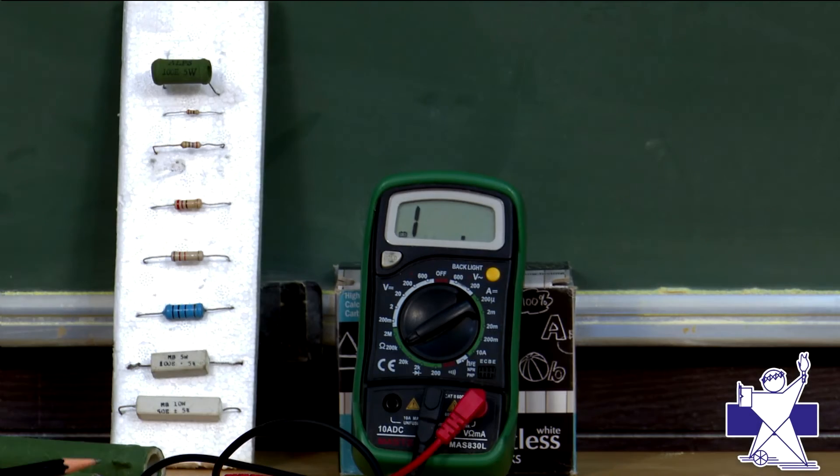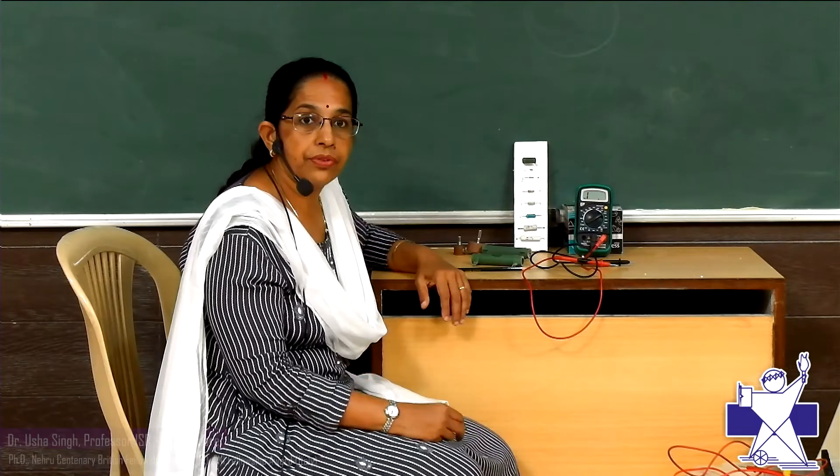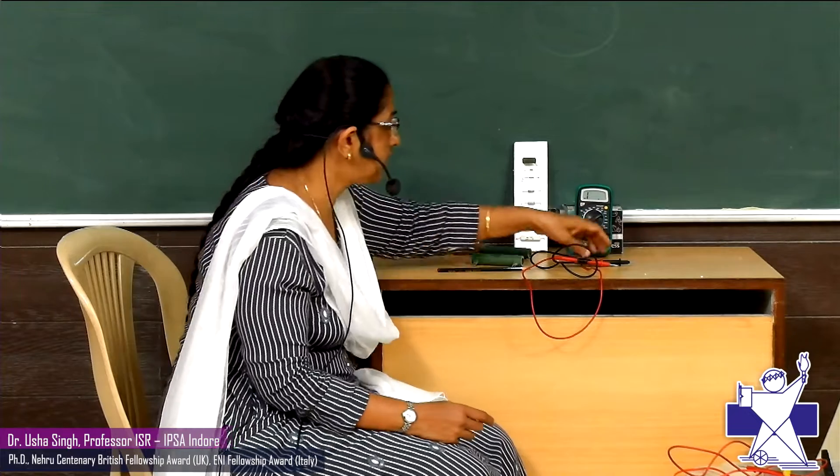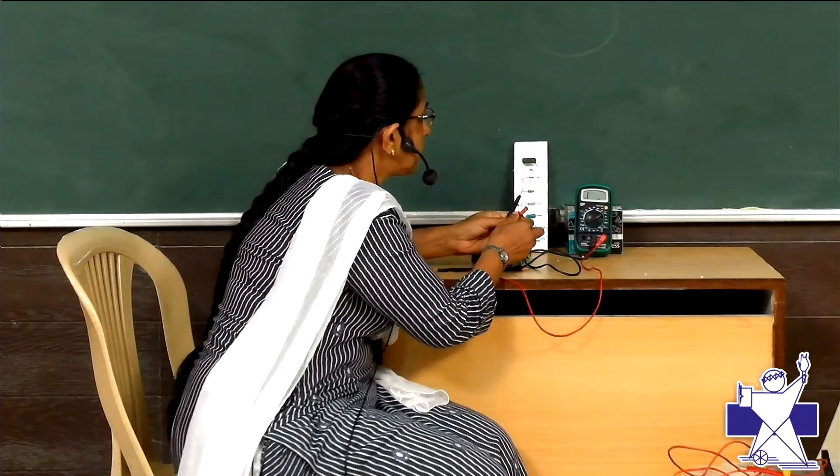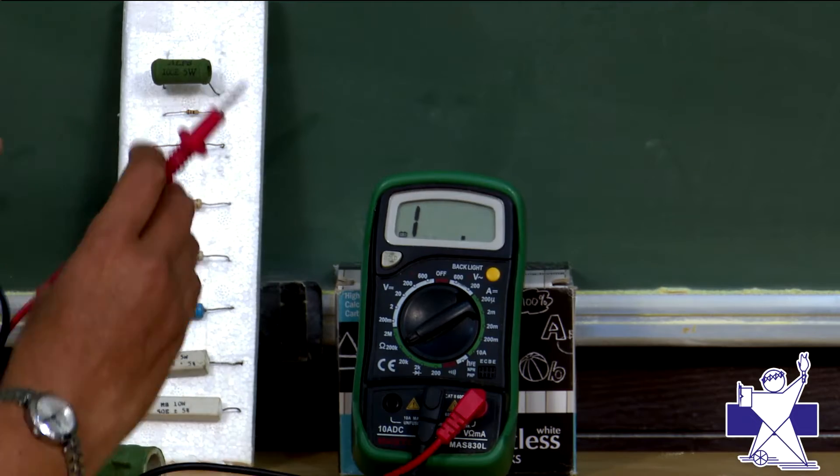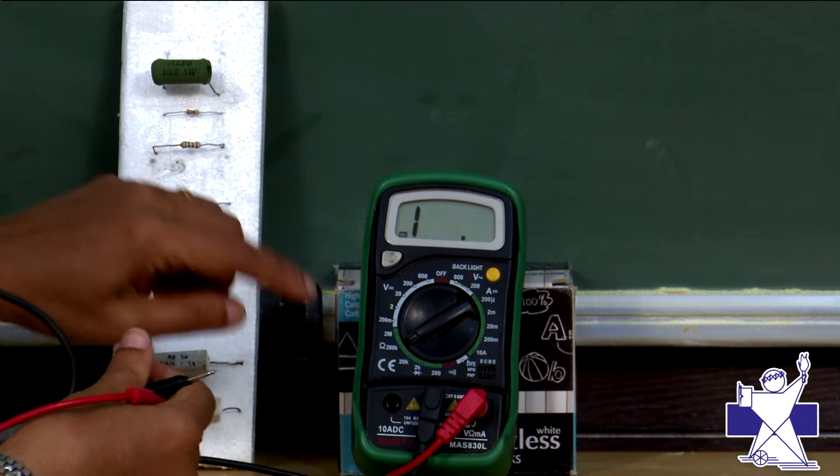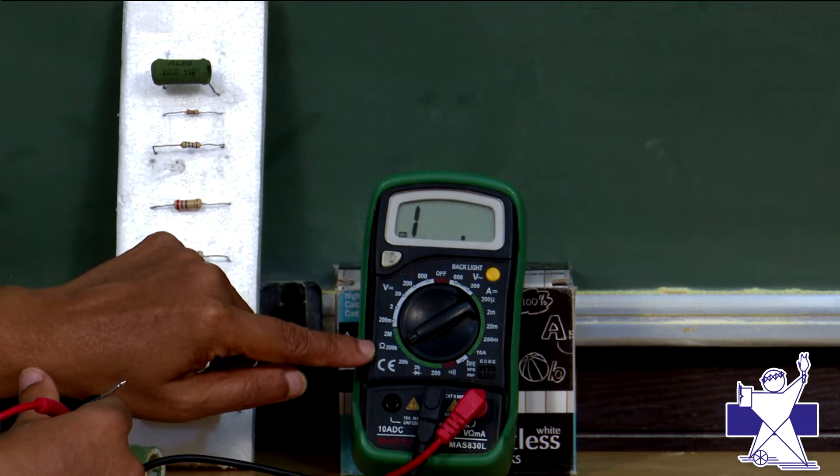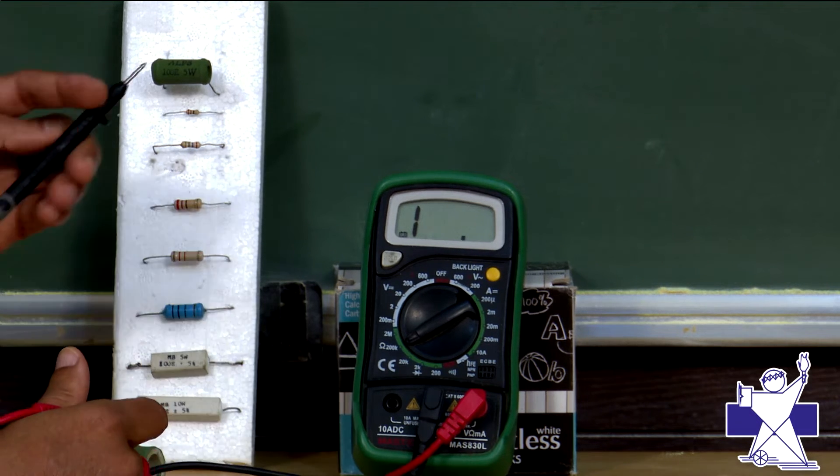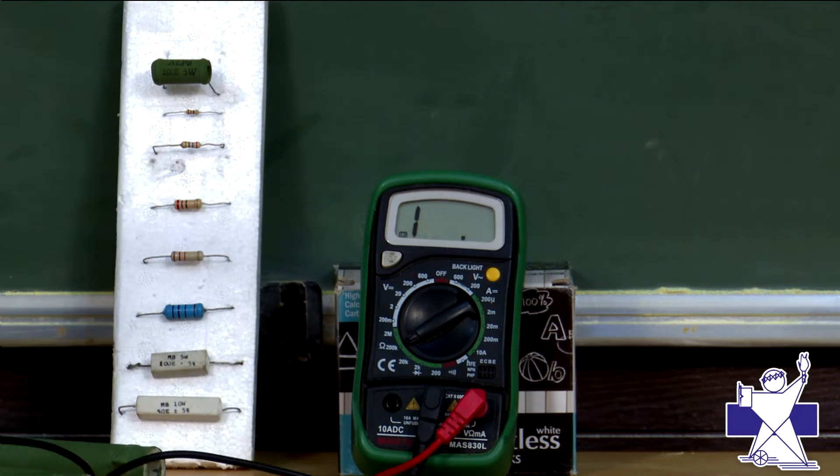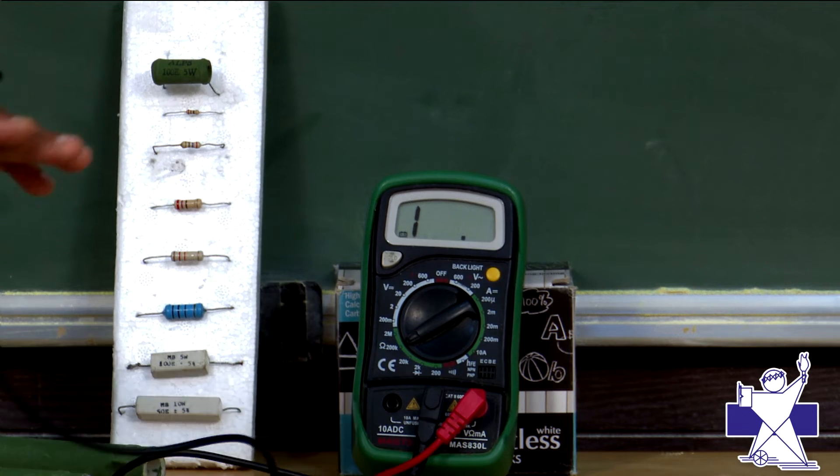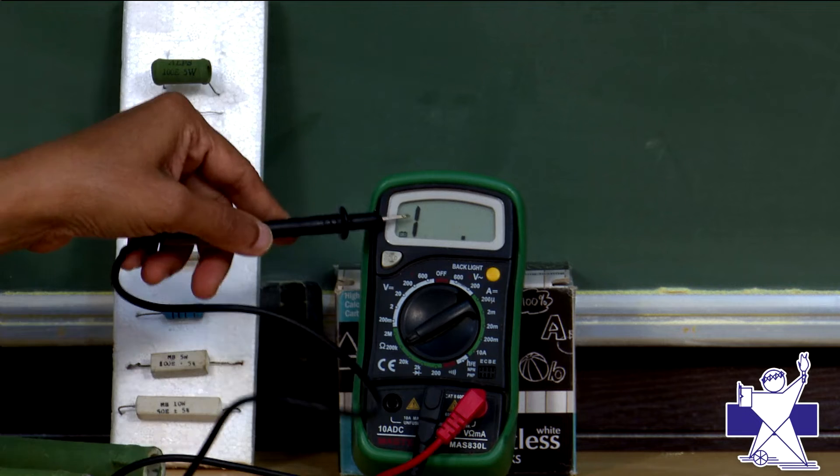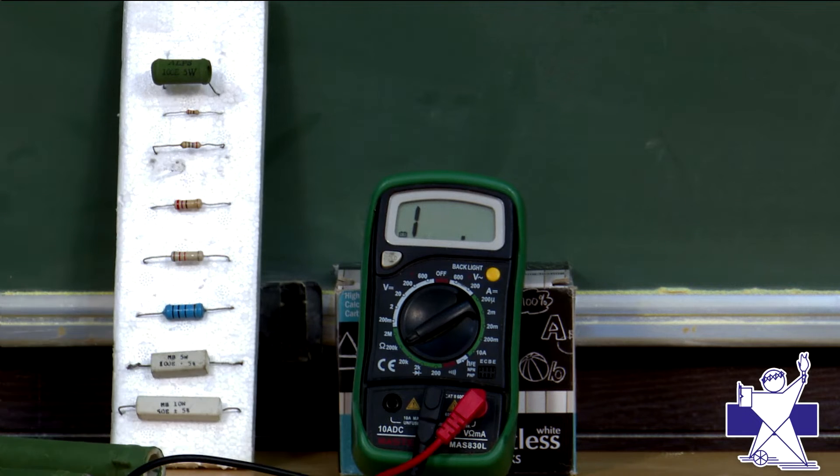Now, how we can measure resistance from the multimeter, we will see that. We want to measure the resistance. I have just switched it on and kept it to 200K. Now see, this one you are getting, that means it is an open circuit. At present, circuit is open, that's why you are getting one. It is infinite resistance.